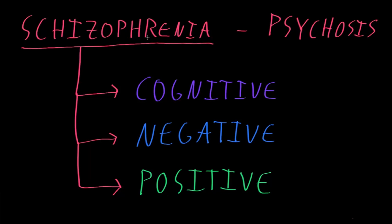As of 2014, when I'm making this video, our understanding of the cause of schizophrenia is very limited. One reason for that is we have a very limited understanding of how the normal mental functions occur that are abnormal in schizophrenia. But in this video I'll briefly discuss some of the things that have been noticed about patients with schizophrenia that might play some role in how the disorder develops.